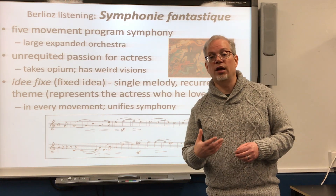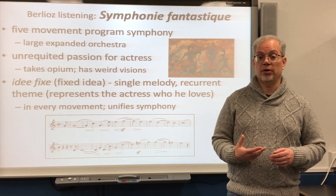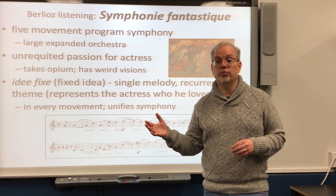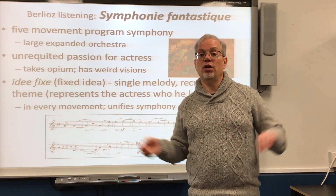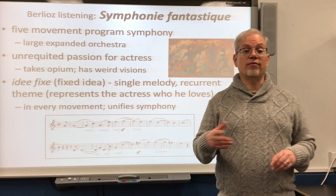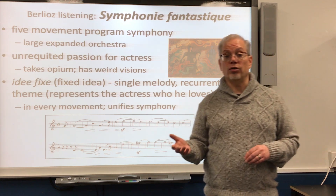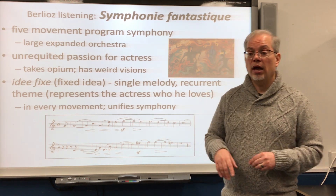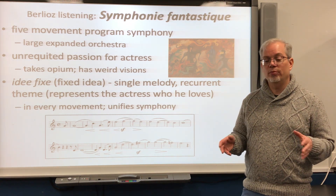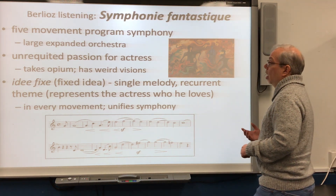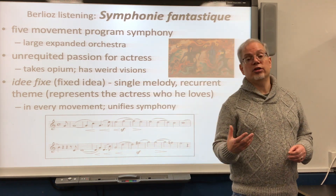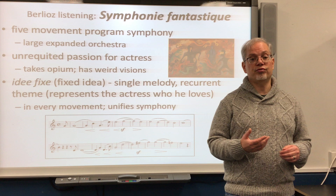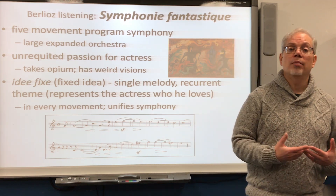Berlioz went to the theater to see the Royal Shakespeare Company from England, and from the audience he fell in love with the lead actress, Harriet Smithson. He decided he loved her passionately and could not live without her, and wrote passionate love letters. Of course, they'd never met in person — he'd only seen her act as Juliet, Ophelia, or Lady Macbeth. This was not very logical, but Berlioz was not logical. In real life, Smithson rejected him because she thought he was extremely creepy. If they had restraining orders in those days, she probably would have taken one out on him.